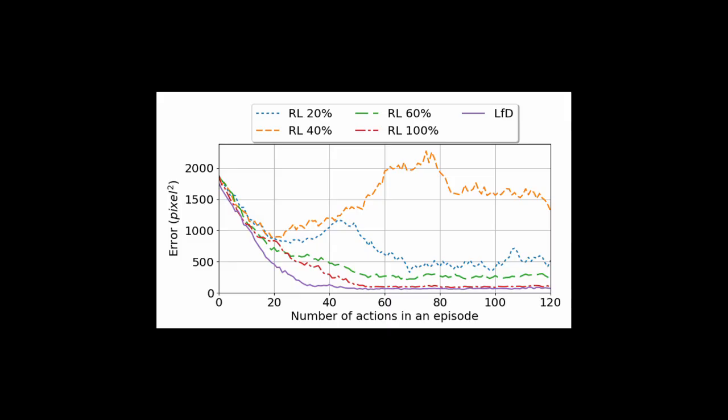The fully trained controller successfully minimized positioning error. We compared the performance of the controller with learning-from-demonstration and at different stages of reinforcement learning. As expected, reinforcement learning does not perform well until it has been completely trained. However, learning-from-demonstration is able to perform the task immediately after initialization when desired tissue point positions are not far from the ones in the demonstrations.